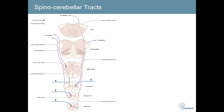The next tract is the dorsal spinocerebellar tract, which covers T1 to L2. It again synapses in the dorsal grey horn of the spinal cord, but the second order neuron does not decussate and ascends all the way up in the dorsal or posterior spinocerebellar tract. It then passes into the cerebellum via the inferior cerebellar peduncle and stays ipsilateral to the origin of the sensation.